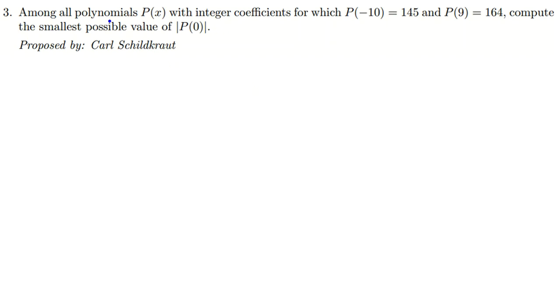Problem number three: Among all polynomials P(x) with integer coefficients for which P(-10) = 145 and P(9) = 164, compute the smallest possible value of |P(0)|.